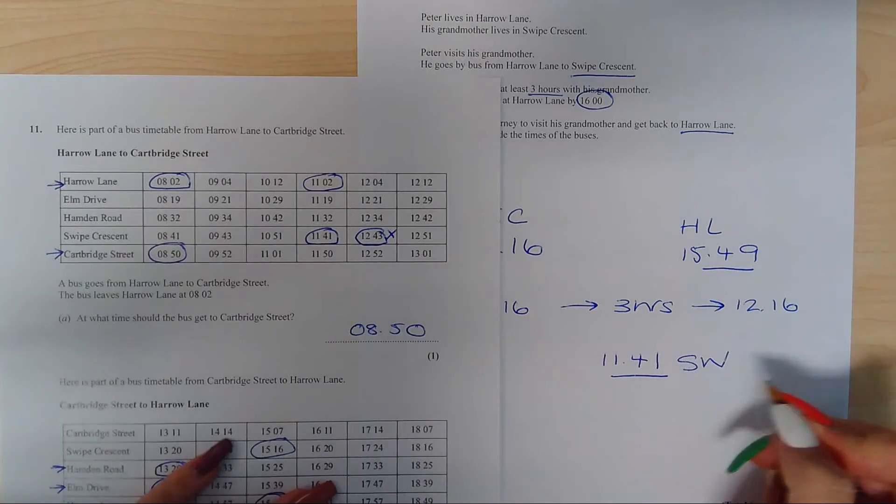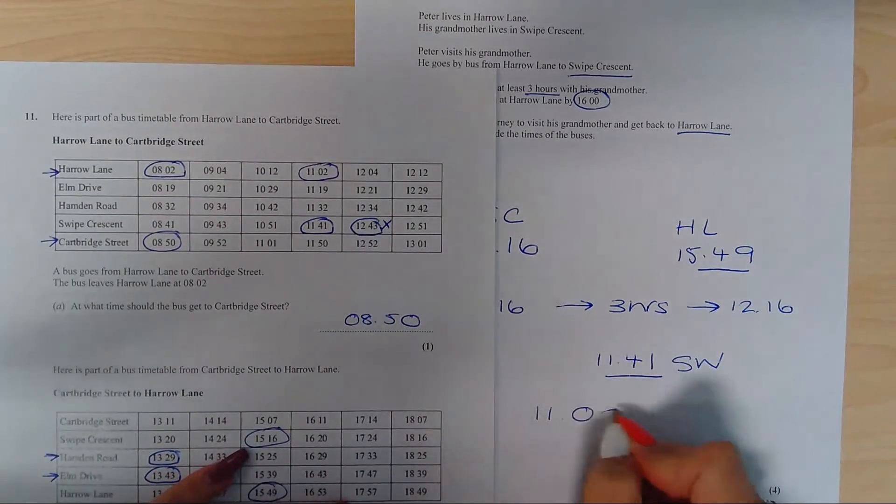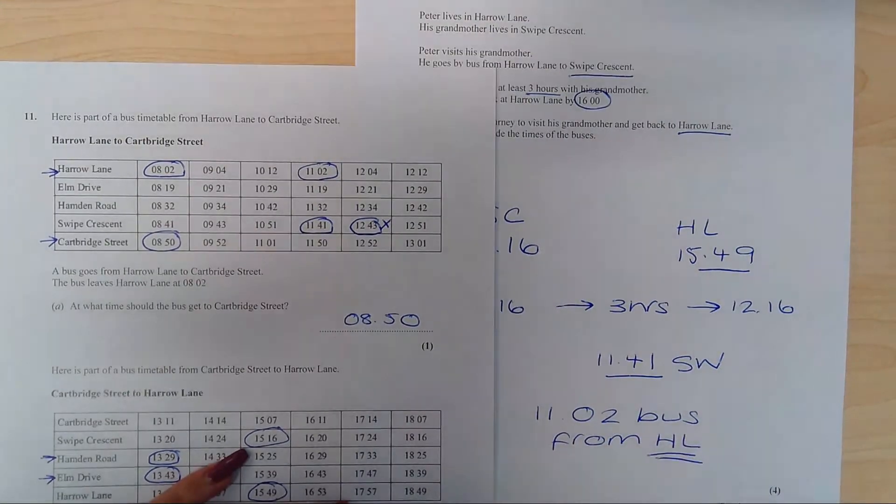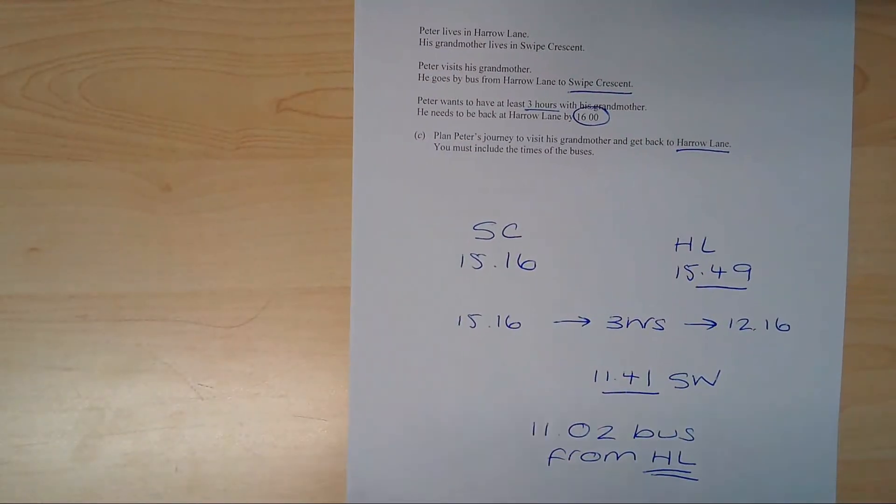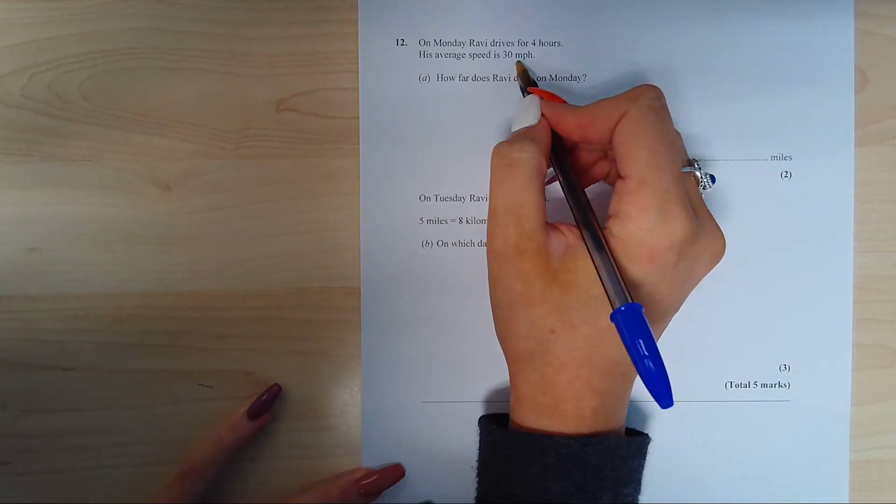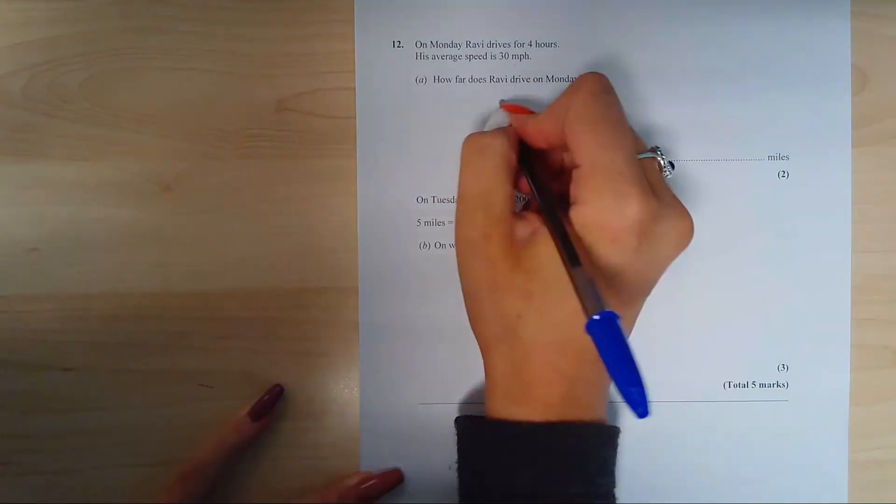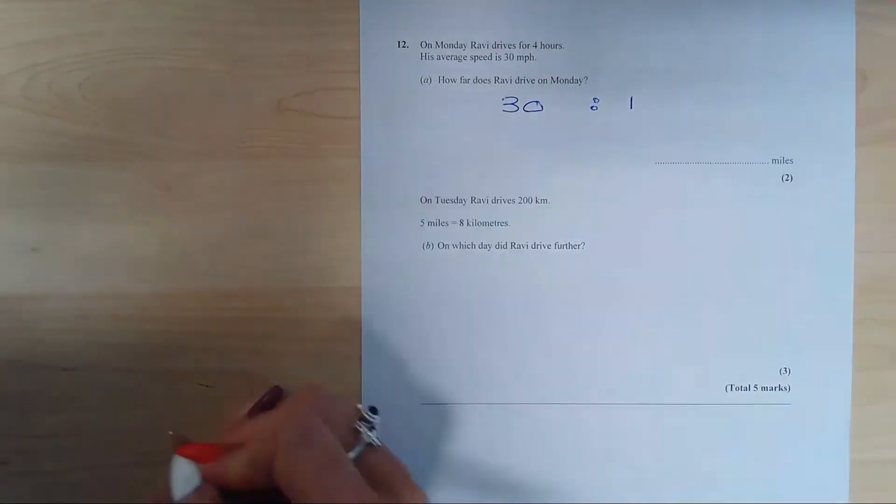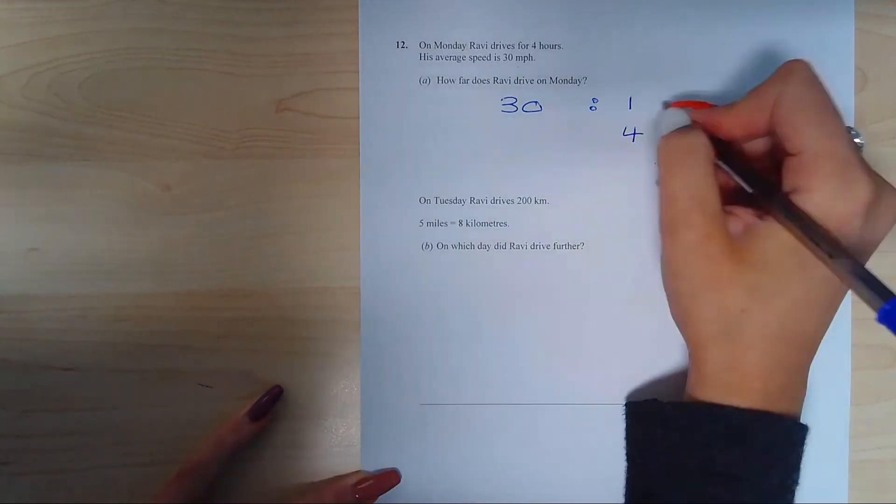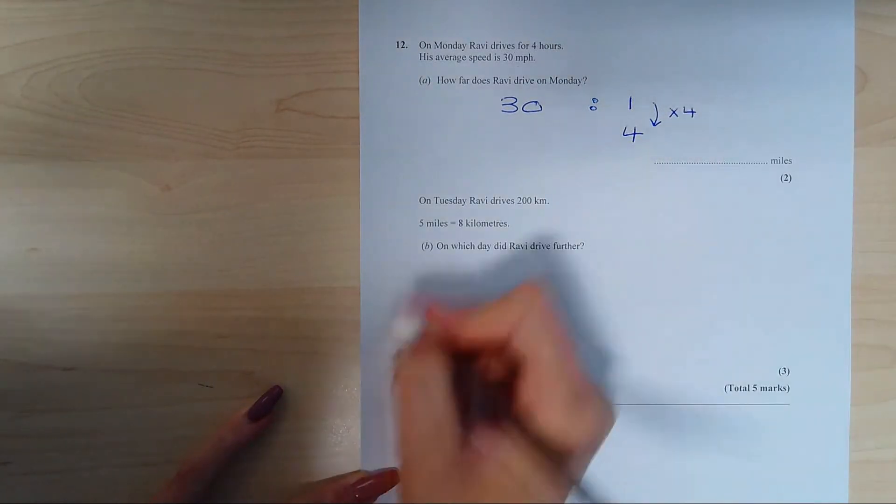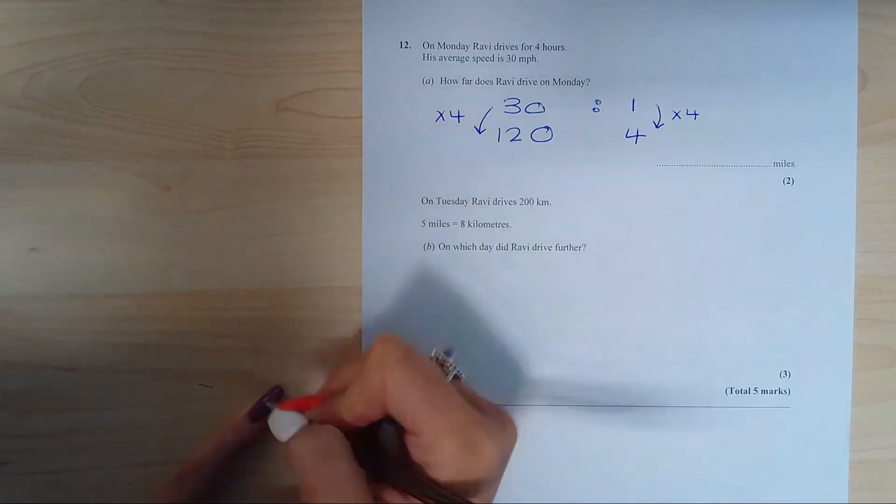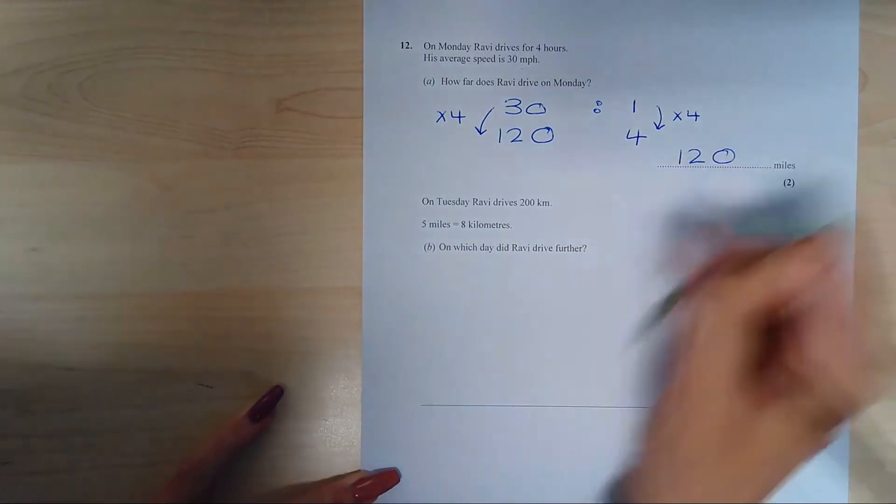So he's going to travel 30 miles in one hour. We know that he's traveled four hours. We need to work out how far he's traveled. So one to four, you're going to multiply by four. You have to do the same to the other side because it's a ratio. Therefore, he has driven 120 miles in those four hours.